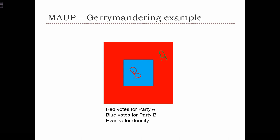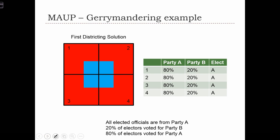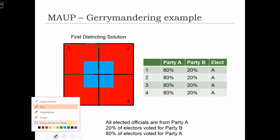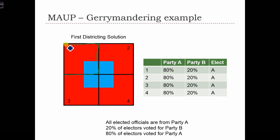Now let's see how different districting patterns for congressional districts would impact the election results of a state that has this kind of population distribution. Here's case number one, the first districting solution. Here we divide the state into four districts: District 1 is the northwest corner, District 2 the northeast, District 3 the southwest, and so on. In this case, we see that 80% of each district includes people who are more likely to vote for the red party. So 80% of District 1 is going to vote for party A.